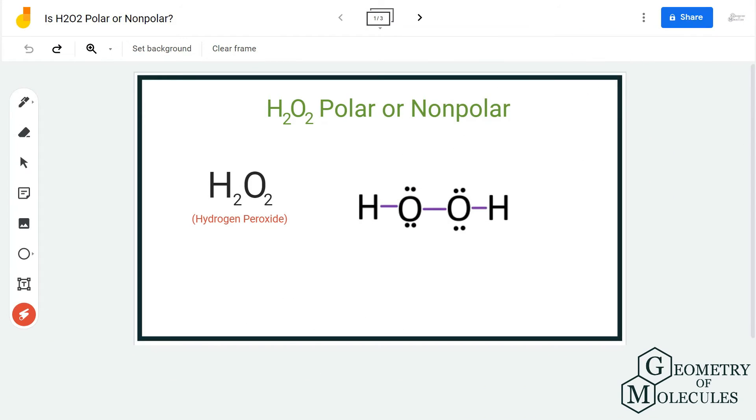Hi guys, welcome back to our channel. Today in this video we are going to find out the polarity for H₂O₂ molecule, which is also known as hydrogen peroxide or dihydrogen dioxide. To understand its polarity, we are first going to look at its Lewis structure, followed by its shape, and then we'll check if there is a net dipole moment in this molecule.